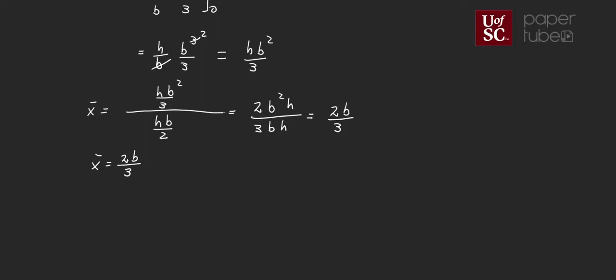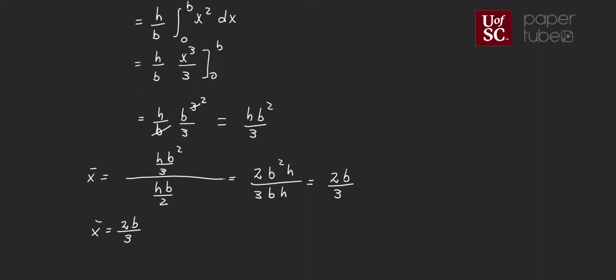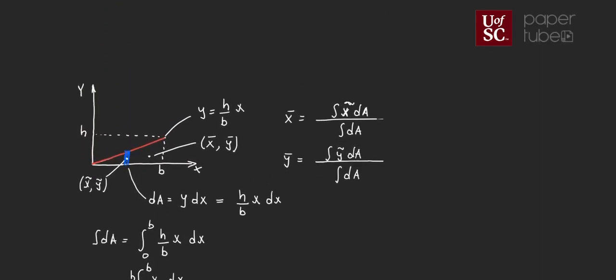Now I have a challenge for you: can you calculate Ȳ? Here's a trick — switch the orientation of your dA. Instead of a vertical dA, use a horizontal dA. The answer is that Ȳ should equal h/3. Give it a shot and see if you can get that result using a horizontal differential of area.